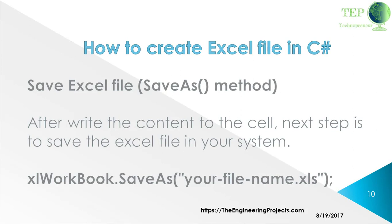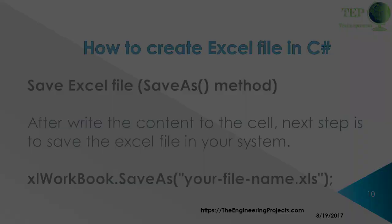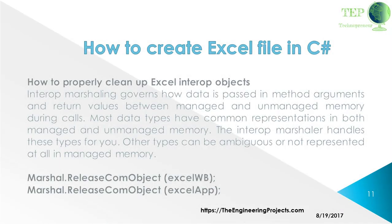Next is saving the Excel file using the SaveAs method. After writing content into the cells, the next step is to save the Excel file: excelWorkbook.SaveAs(filename). Interop marshalling governs how data is passed in method arguments and return values between managed and unmanaged memory during calls. Most data types have a common representation in both managed and unmanaged memory, and the interop marshaller handles these types for you.